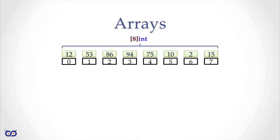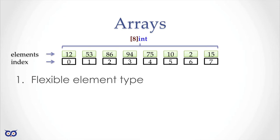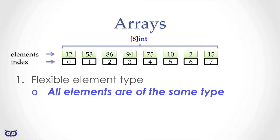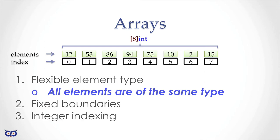Let's start with the first collection type we looked at — arrays. You can declare an array as any number of a certain type and access elements by index. One feature is flexible element type, meaning all elements must be of the same type. An integer array has every element as an integer. Boundaries are enforced so you don't go out of bounds, and we have non-negative integer indexing.